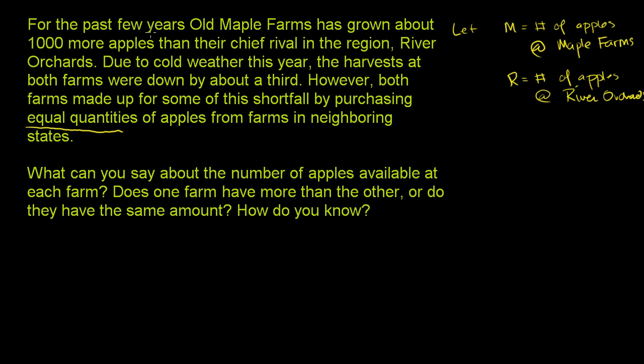So this first sentence, let me do this in different colors. They say, for the past few years, Old Maple Farms has grown about 1,000 more apples than their chief rival in the region, River Orchards. So we could say, hey, M is approximately R plus 1,000. But since we don't know the exact amount, it says it's about 1,000 more.